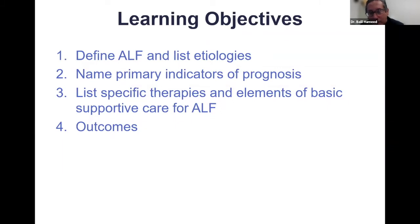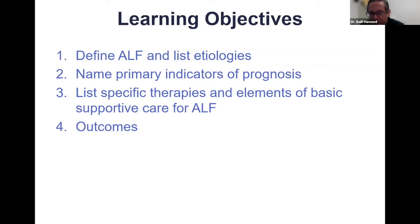We'll discuss indicators of how these patients will do if they develop acute liver failure, which patients will need liver transplantation depending on availability, and in the U.S. we do consider that as one of the treatment and curative options. We'll talk about specific therapies, elements of basic supportive care, and outcomes for these patients.